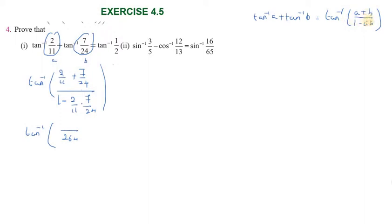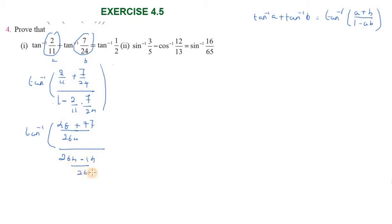Working through the proof: combining the fractions in the numerator and denominator using the tan inverse subtraction formula. In the denominator we get 264 minus 14 by 264. The 264 cancels, giving tan inverse of 48 plus 77 over 125, which simplifies with 264 minus 14 equal to 250.